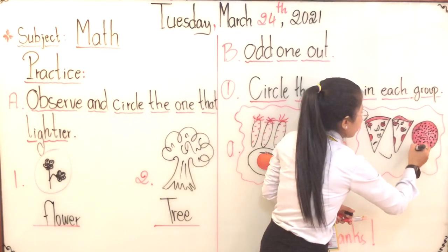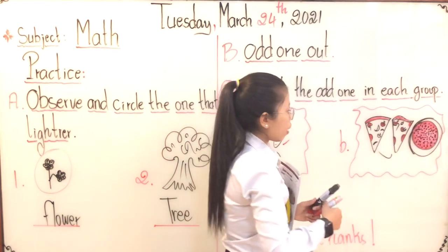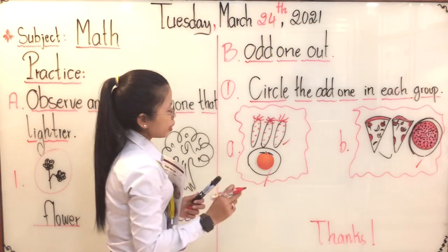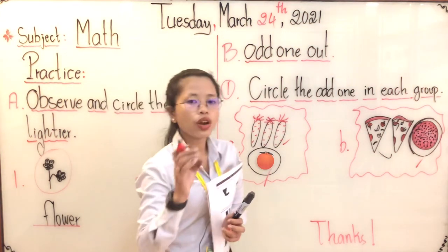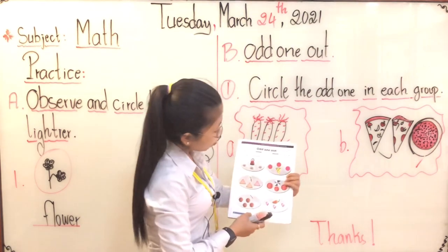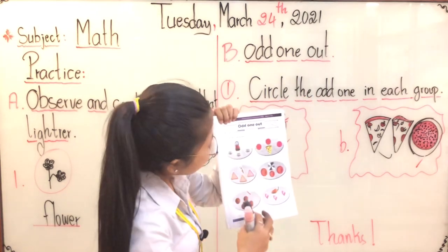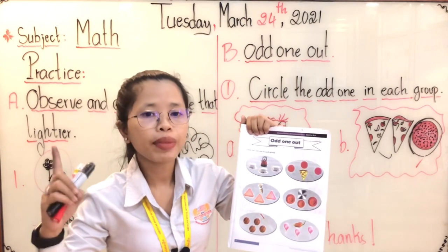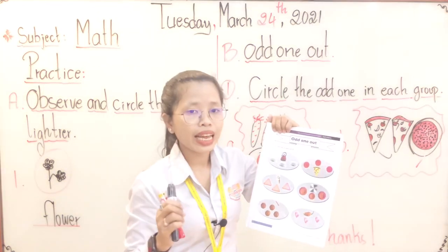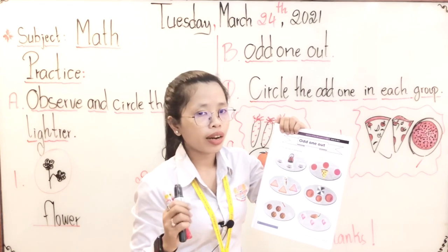So right now we have found already the picture that is the odd one out. In each group, we have to circle the one that is different. You can also see this in your taskbook on page 37. When you stay home, you can practice by getting out a pencil and circling the one that is the odd one out.